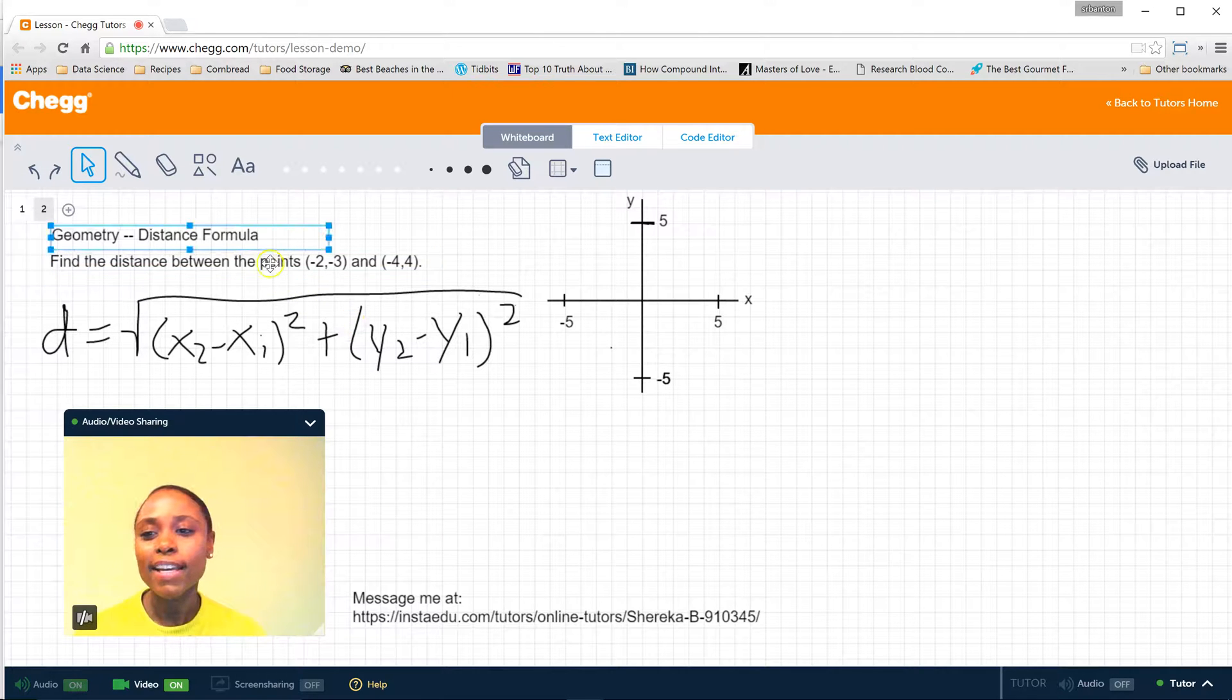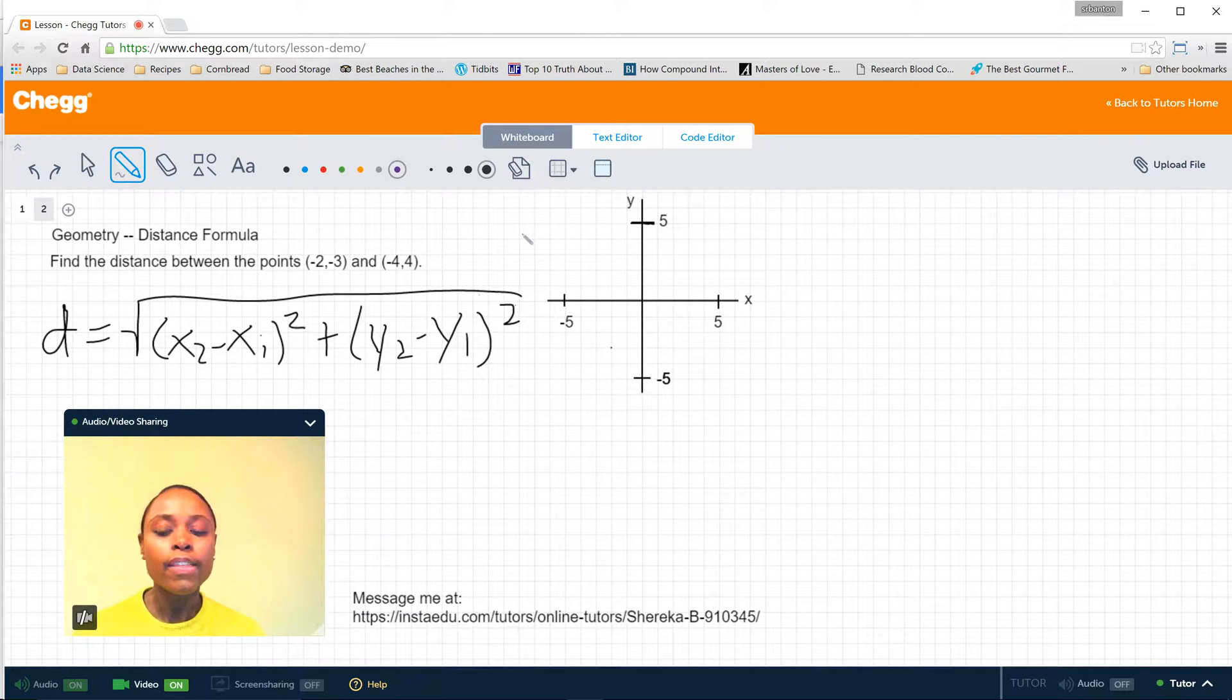So the problem I provided today is on finding the distance between the points (-2, -3) and (-4, 4). So the first thing that I'm going to do is just plot these points, because I find that it's very helpful for students, particularly in geometry, for them to draw these problems out just so that they can better visualize what it is that's going on.